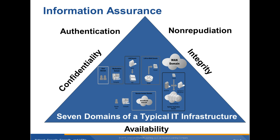Information assurance encompasses authentication, non-repudiation, confidentiality, integrity, and availability surrounding the seven domains of a typical IT infrastructure. Network security goals vary from organization to organization, but often include common mandates such as ensuring confidentiality of resources, protecting the integrity of data, maintaining availability of the IT infrastructure, ensuring the privacy of personally identifiable data, enforcing access control, monitoring the IT environment for violations of policy, and supporting business tasks for the overall mission of the organization.